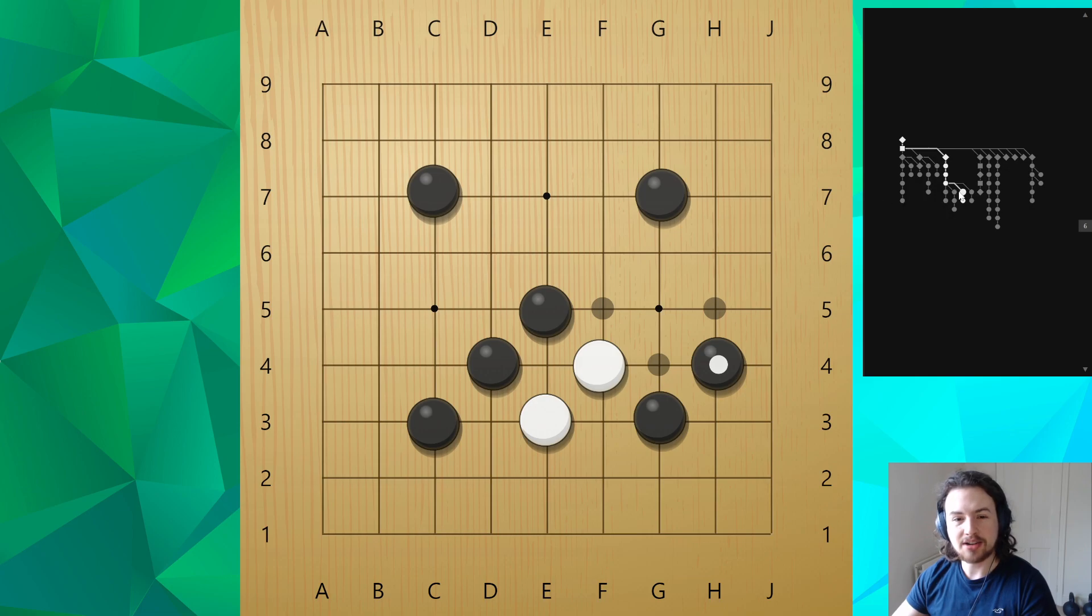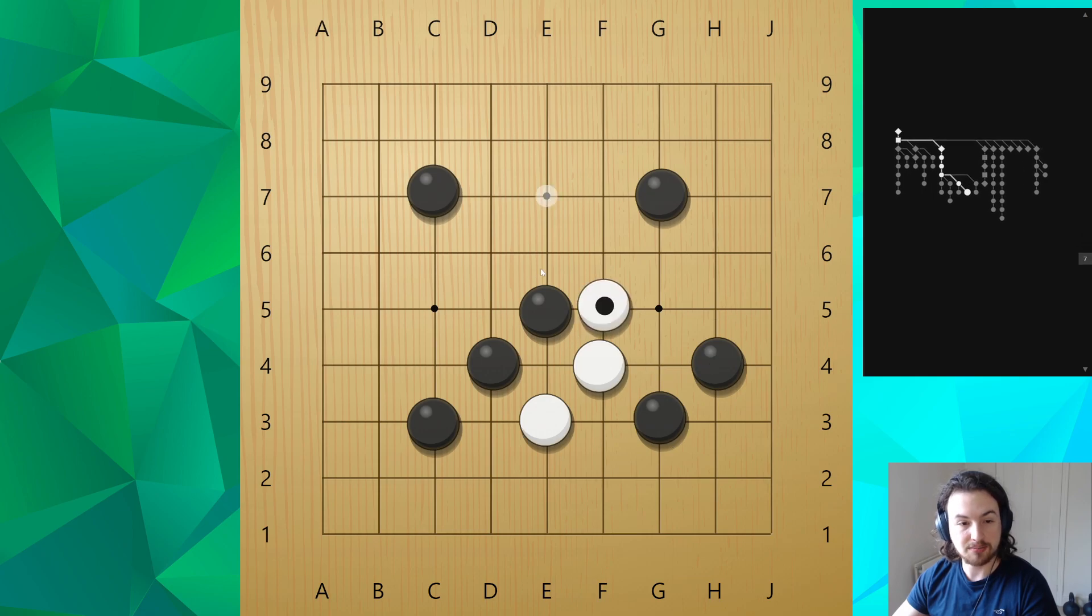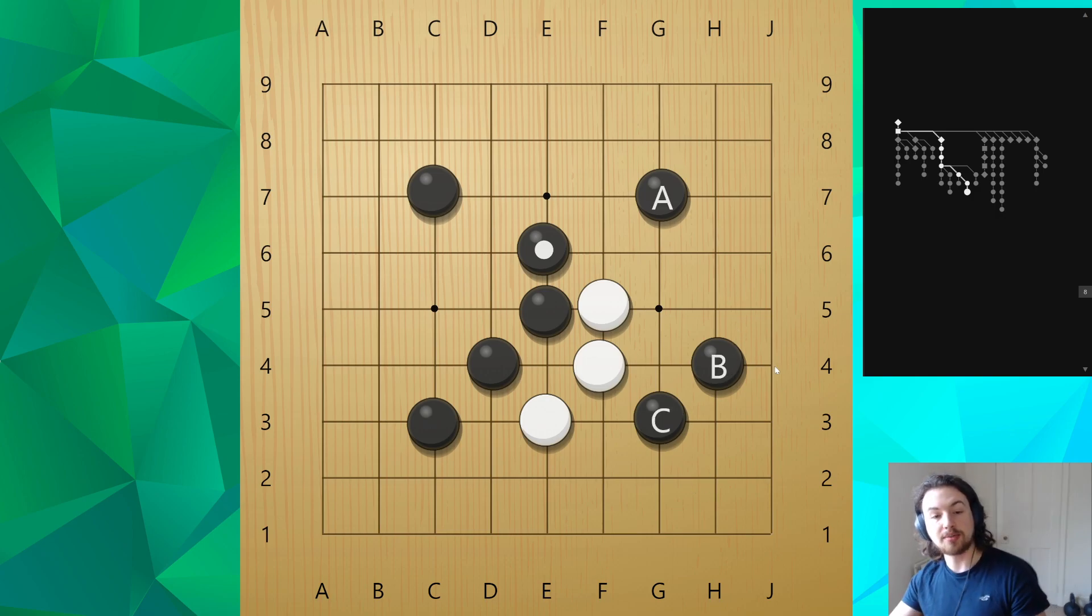I think I showed the knight's move, but this move also works similarly. Say white plays here, then maybe the connection between a and b isn't as strong. But then the connection between b and c is stronger. So sometimes you have to weigh out the pros and cons of different shapes by reading.